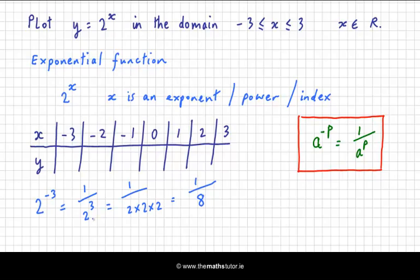Now the most common mistake people make with powers is they confuse it with multiplication, and they say that 2 to the power of 3 is 6. Of course it isn't. You multiply 2 by 2 and then by 2 again, so we get 1 over 8. So we can fill in now in my table, when x is minus 3.